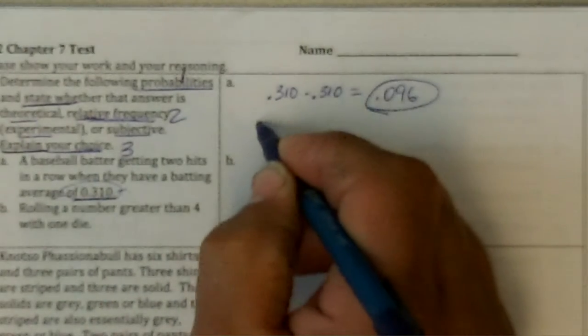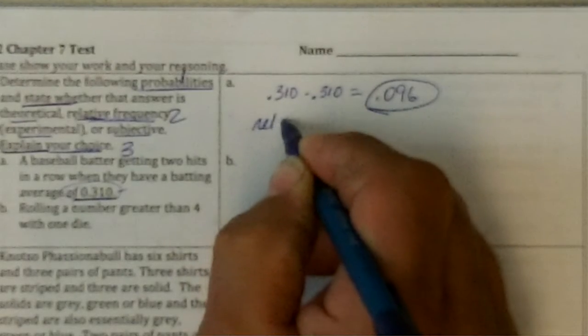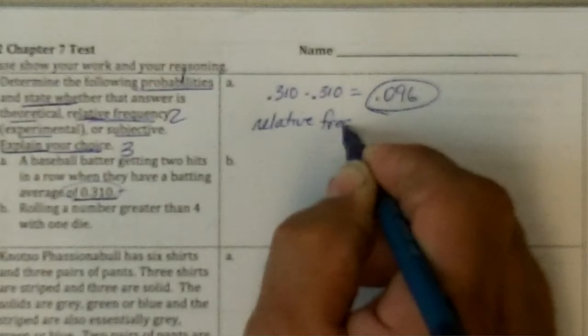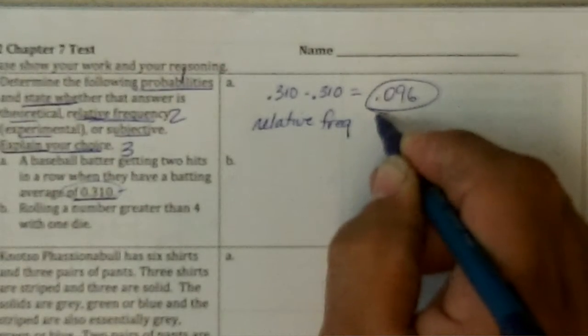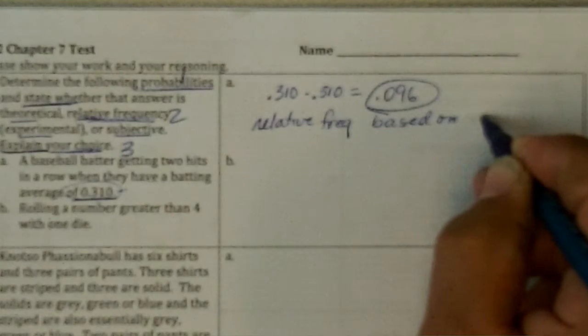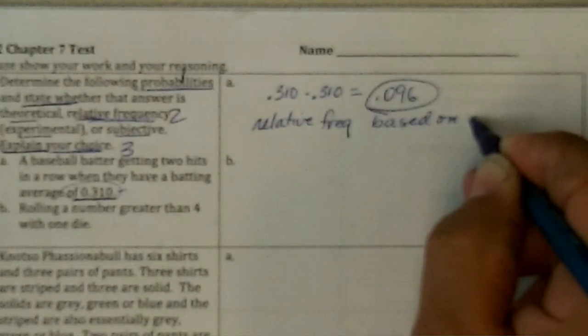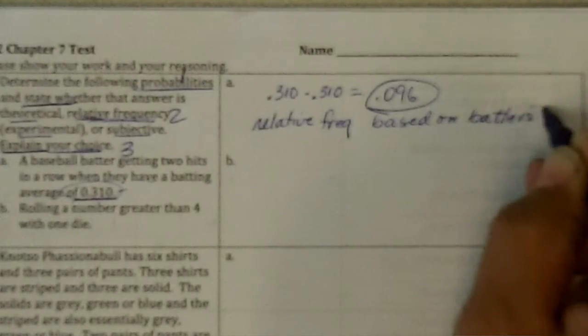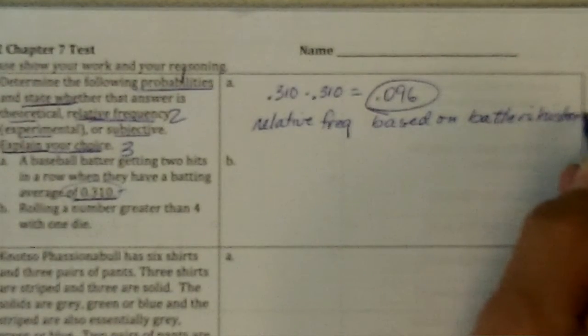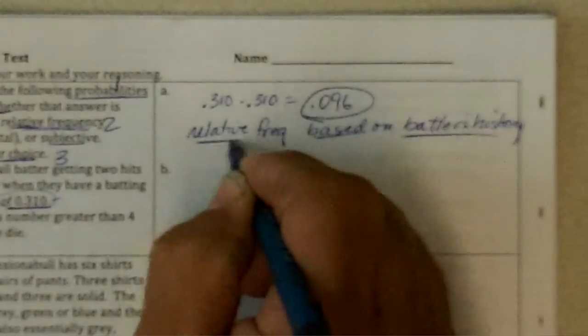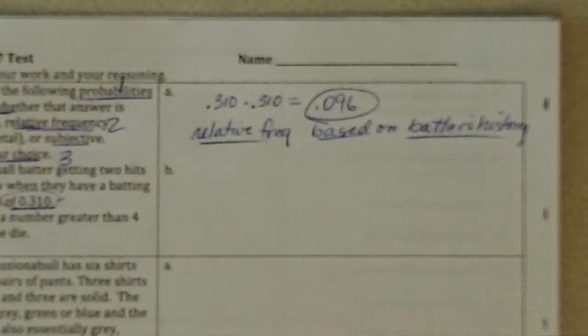So this is based on relative frequency based on the batter's history, where you collect data. And so that's a batter's history, which is relative frequency from previous at bats.